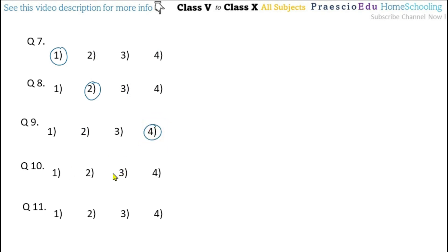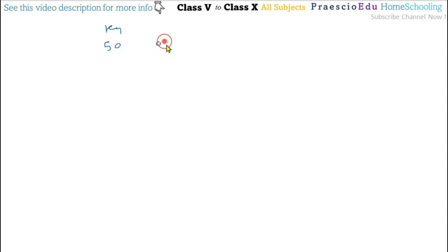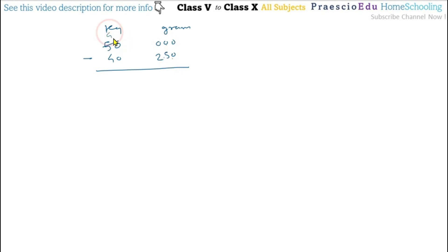Question number 10: A shopkeeper sold 40 kg 250 grams of jowar out of 50 kg. How much jowar is left? We set up 50 kg 000 grams minus 40 kg 250 grams. Since we cannot subtract 250 from 0, we borrow 1 kg — making it 49 kg and 1000 grams. So 1000 minus 250 equals 750 grams and 49 minus 40 equals 9 kg. Answer: 9 kg 750 grams, given in option number 4.